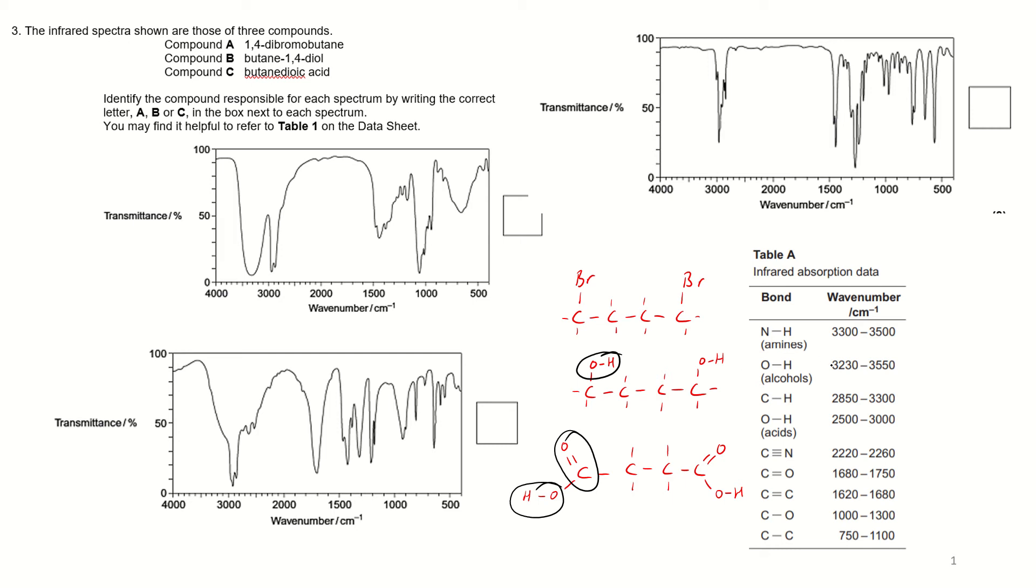So first off, if we try and look for the alcohol OH, 3230 to 3550, and the OH is a big broad peak. So if I look here, yeah, this seems to be it straight away. So I'll put a little question mark there, possibility.